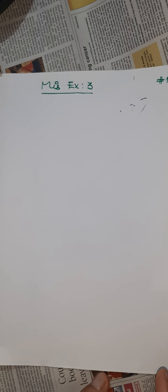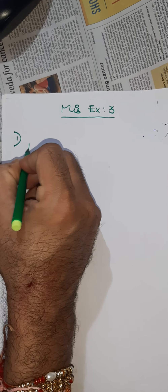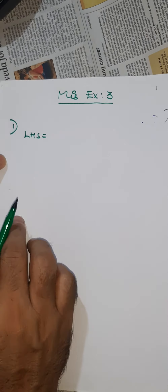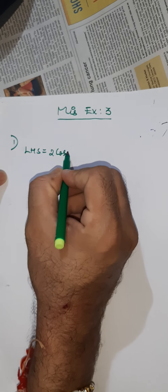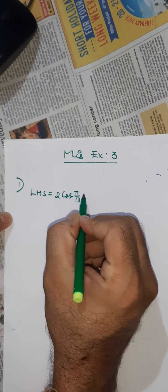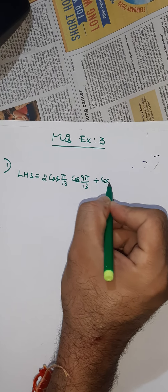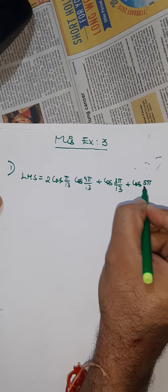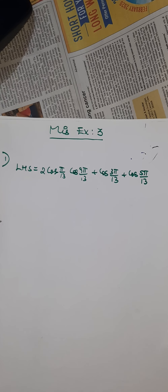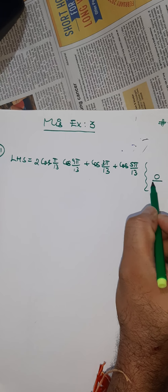In the miscellaneous exercise 3, question number one, the left-hand side is twice cosine(π/13) into cosine(9π/13) plus cos(3π/13) plus cosine(5π/13). We want to show that the value of this expression is 0, which is the RHS.